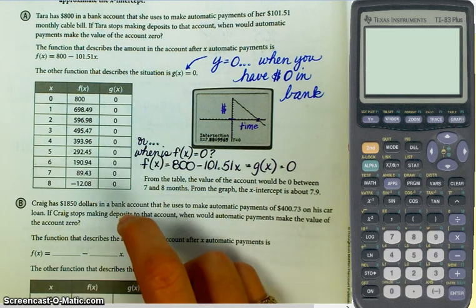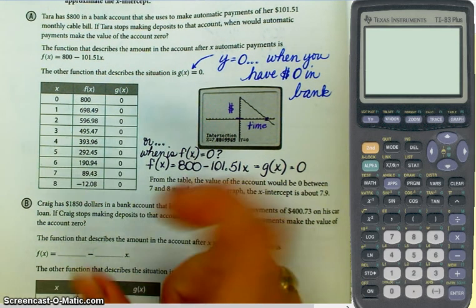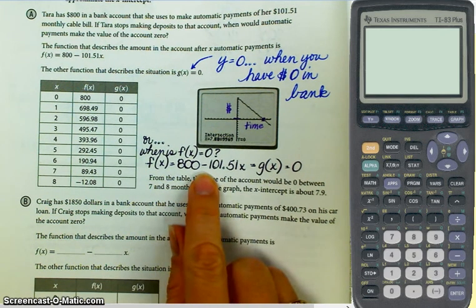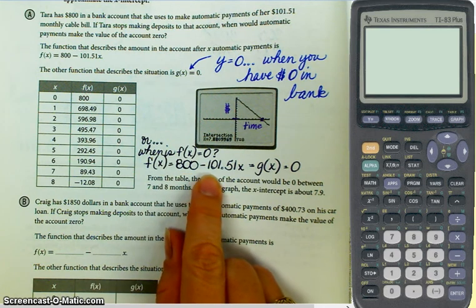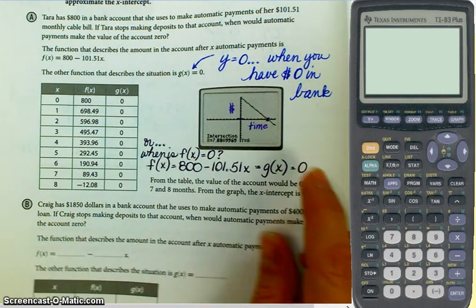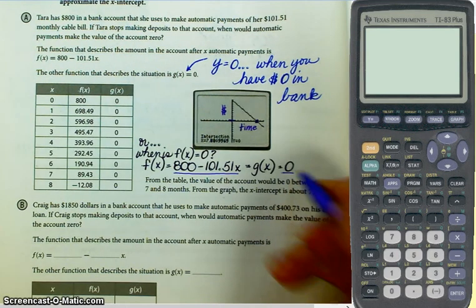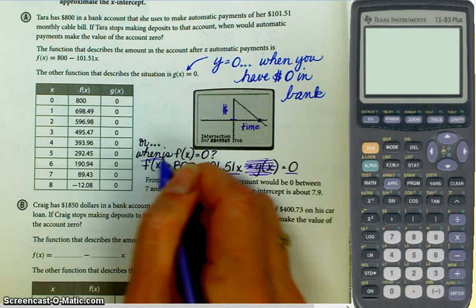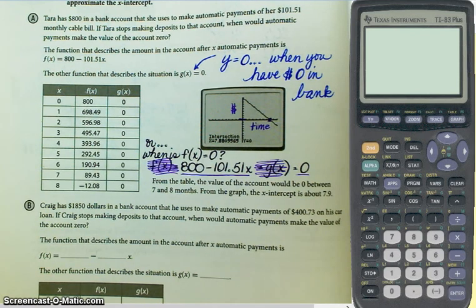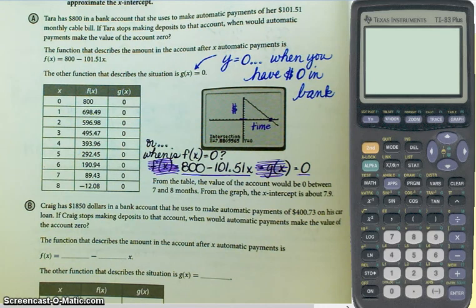We can do this a variety of ways, like we've been learning. We can use our graph and put the two equations in our graphing calculator. We can put the values in a table. We can set the two equations equal to one another. If f of x is equal to 800 minus 101.51x, and set it equal to the other equation. We set them equal to each other so we can solve. Basically, what we're doing is we're setting this equal to zero. Because if all of those things are equal, then that means this is equal to zero also. And then you can just solve for x.